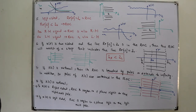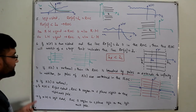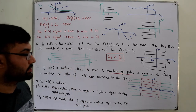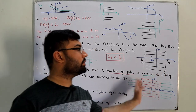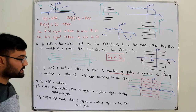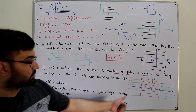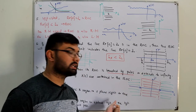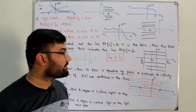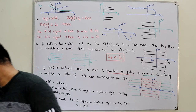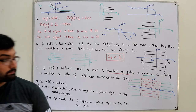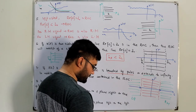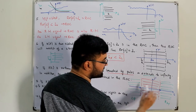Property number eight, studied together with seven: if x(s) is rational and x(t) is right-sided, the ROC is the region in the s-plane to the right of the rightmost pole — bounded by that pole and extending to infinity. If x(t) is left-sided, the ROC is to the left of the leftmost pole. If x(t) is double-sided with two poles, the ROC lies in between the two poles.